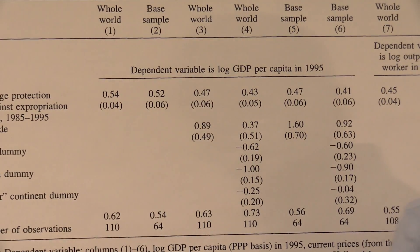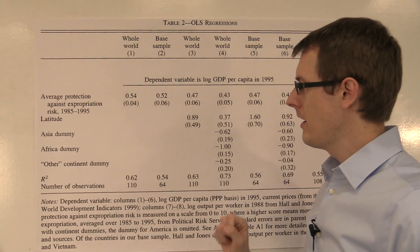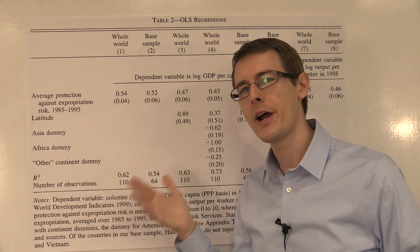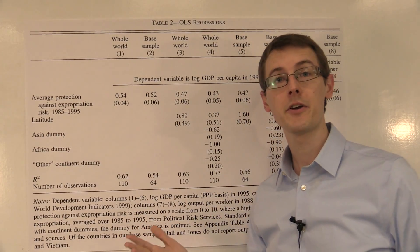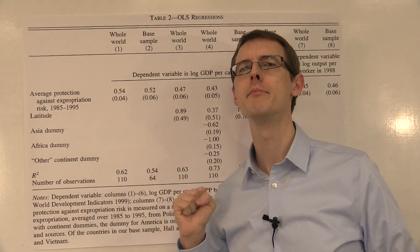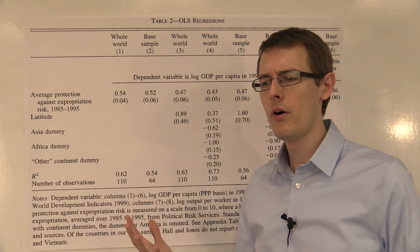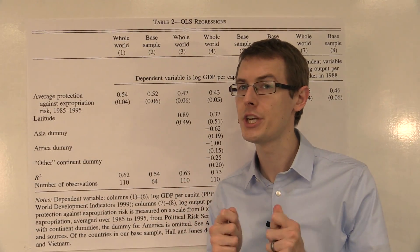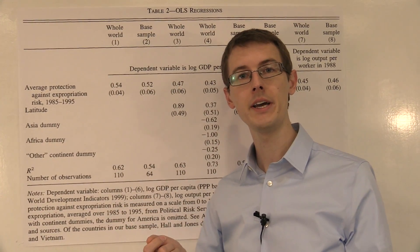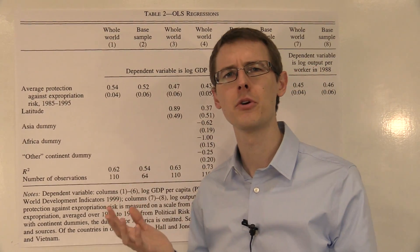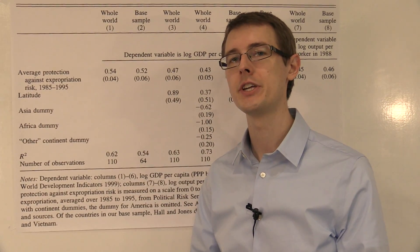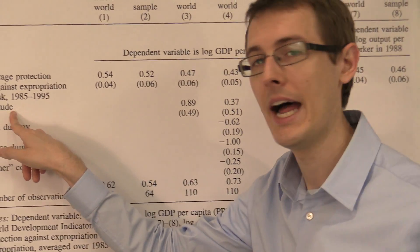That was just the relationship between two variables. Because of this application, researchers in the past have said property rights may matter for economic growth, but other variables matter too — like geography. This is Jared Diamond's famous thesis in Guns, Germs, and Steel: geography really matters. So in this paper, the authors want to know, if I looked at countries with similar geography, is there still a positive relationship between economic development and property rights? One way to measure geography is how close your country is to the equator. That's what this variable, latitude, means — it's 0 at the equator and increases as you get farther from the equator.